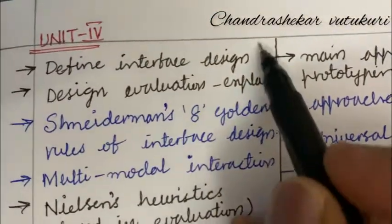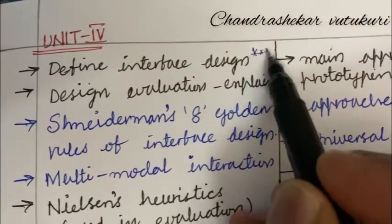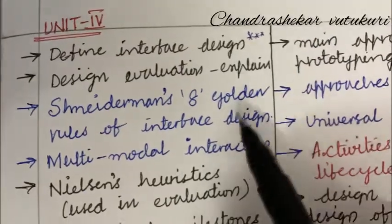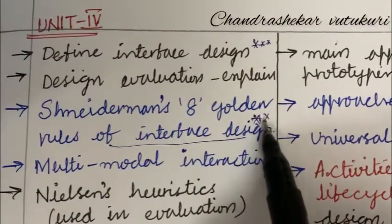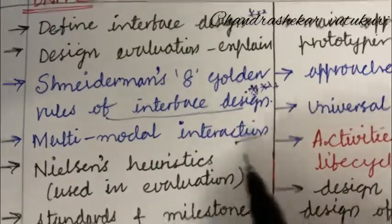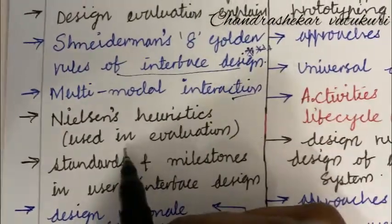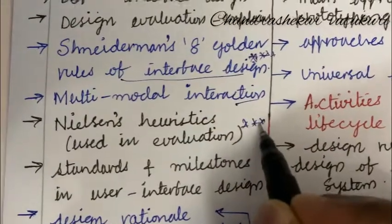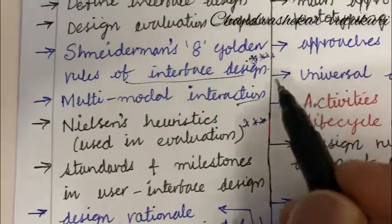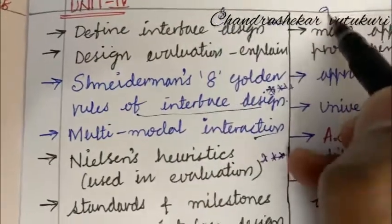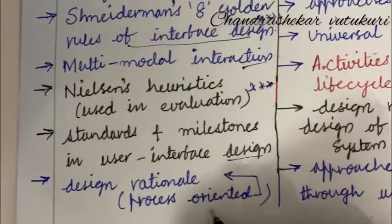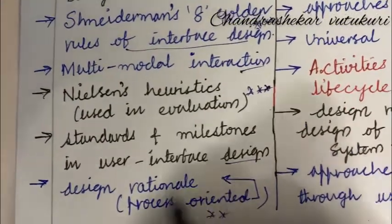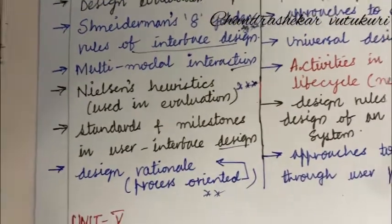Let's look at unit 4 important questions. Define interface design. This is one of the lengthy units. You can skip it or if you are willing to work out, you can work out to score a better mark. Design evaluation and explain it. And Shneiderman's 8 golden rules of interface design is the topmost important question. Multimodal interaction and Nielsen's heuristics used in evaluation is also one of the important questions. This is question number 8 as well as 9. Standards and milestones in user interface design and design rationale and the process oriented related to the design rationale is one of the topmost questions.